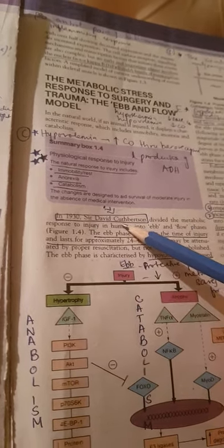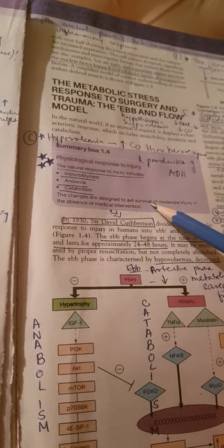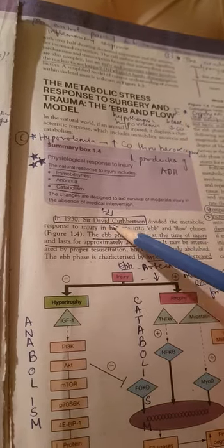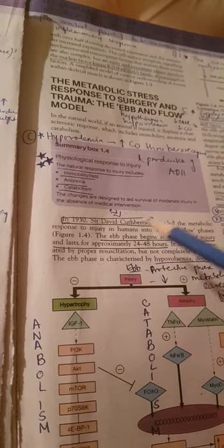In 1930, Sir David Cuthbertson - this name of the scientist can come up - proposed the ebb and flow model. He divided the metabolic response to injury in humans into ebb and flow phases.